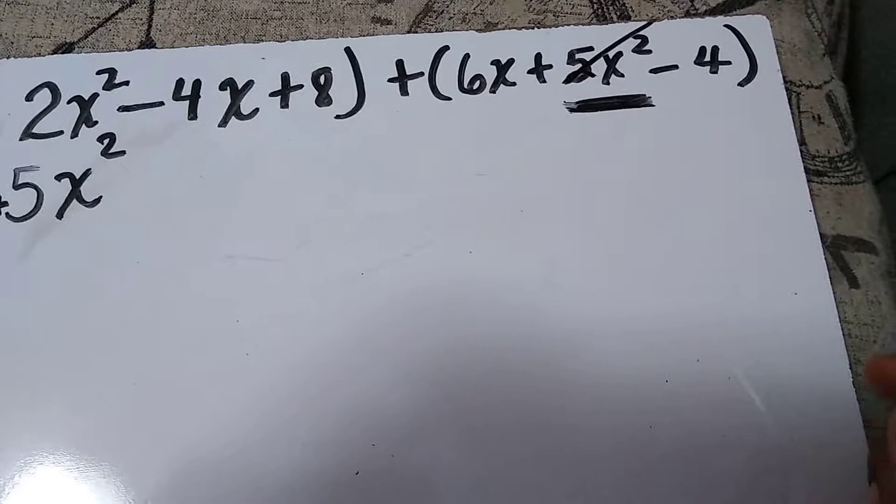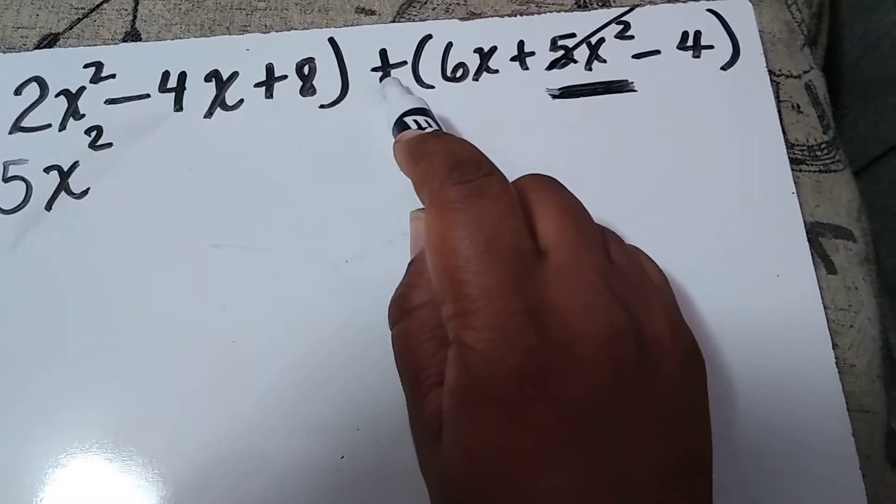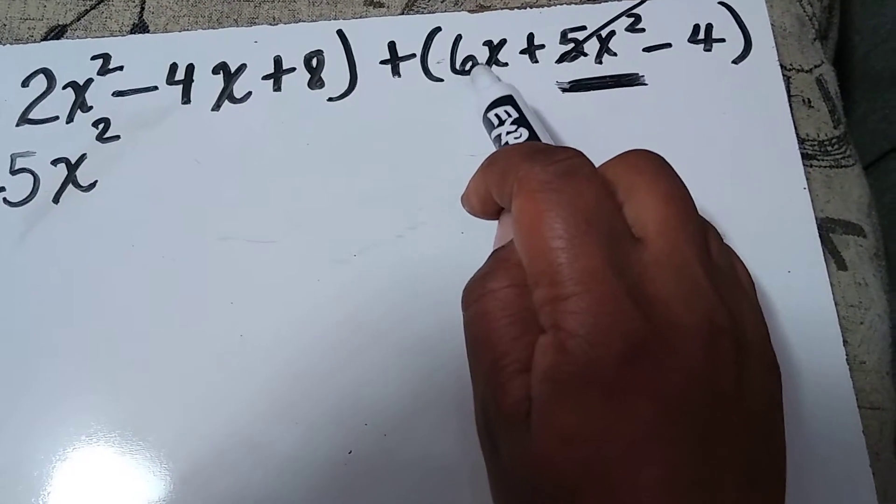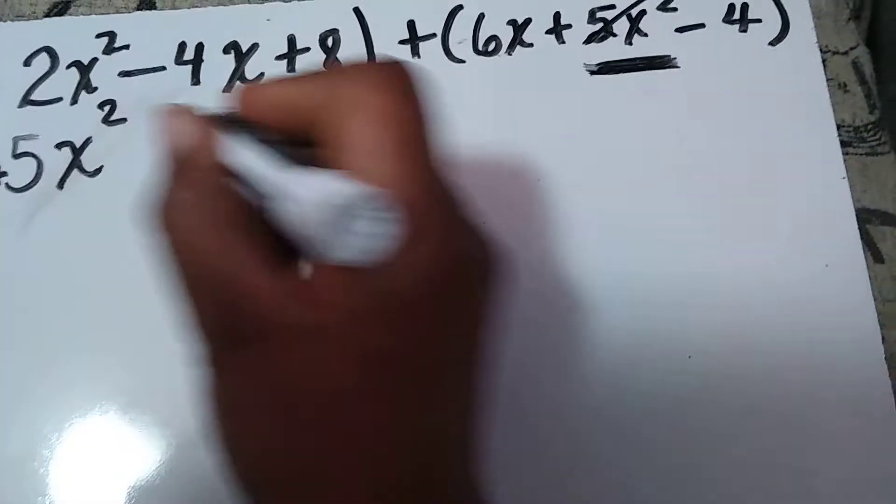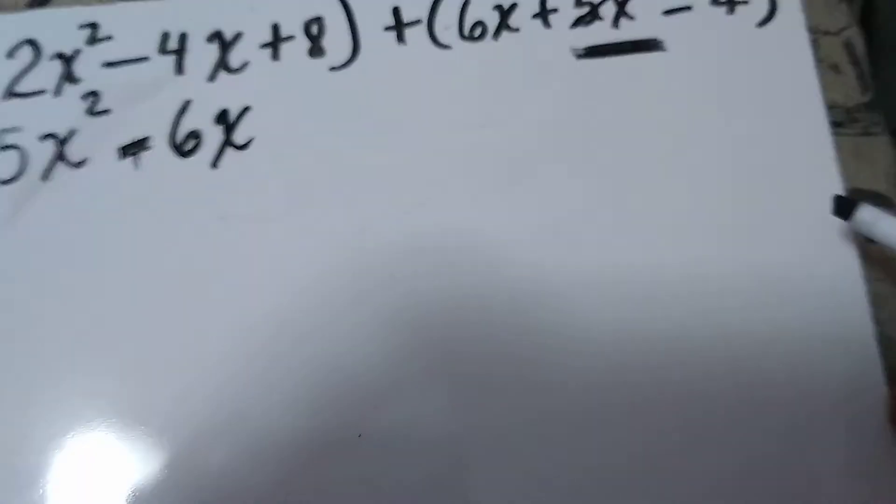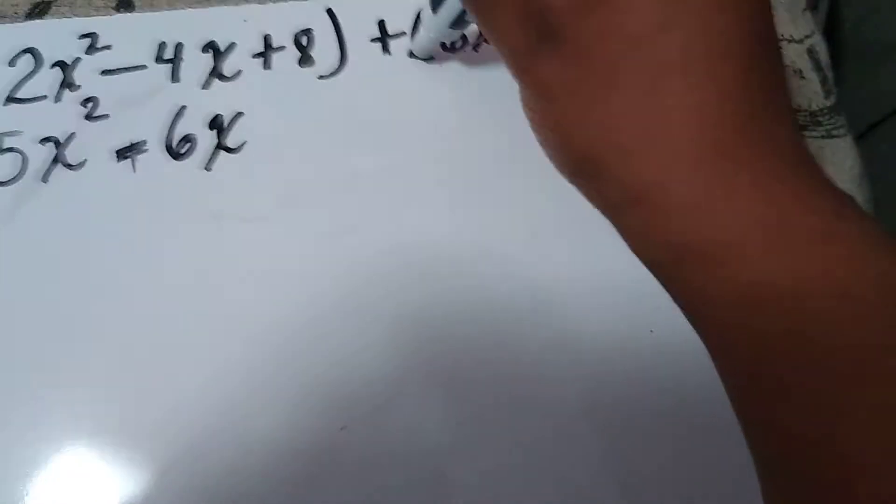Then I'm going to go to the 6x. There's a plus on the outside and there's no sign inside, so I'm going to make the assumption that it's going to be plus. So I'm going to put plus 6x. Then I'm crossing that out because I already used it.